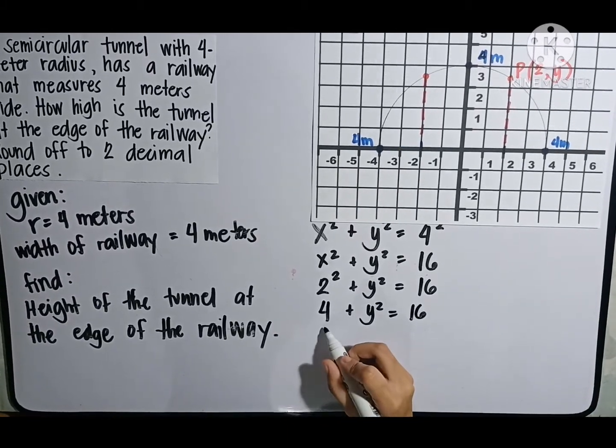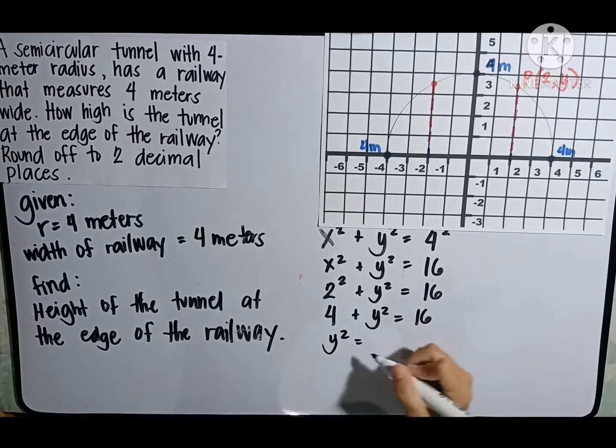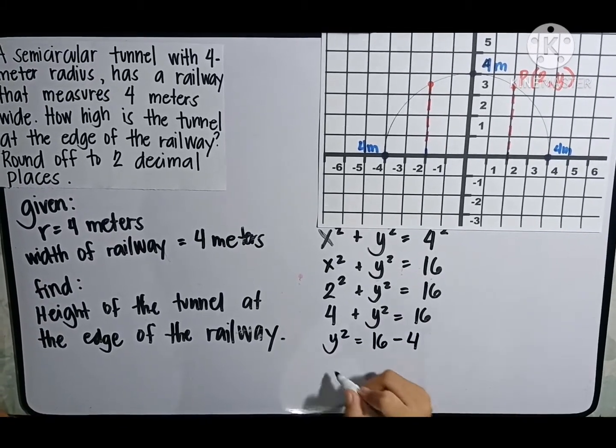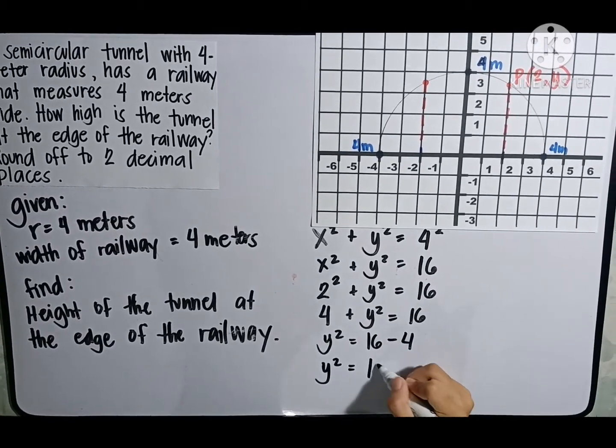Let us transpose this 4 to the other side of the equation. So, it will be y squared is equal to 16 minus 4. Then, y squared will be equal to 16 minus 4 is 12.